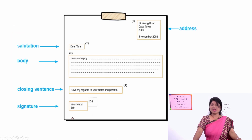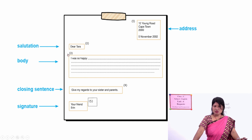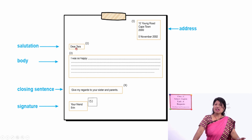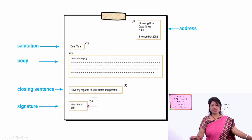Next is a letter. In a letter, at the top right-hand side we write the address first, then the date. Number 1: address and date. Number 2: salutation — like a greeting, for example 'Dear Tara.' Number 3: the main body. Number 4: closing line, then signature and your name. In this way we write a letter. These are the formats.